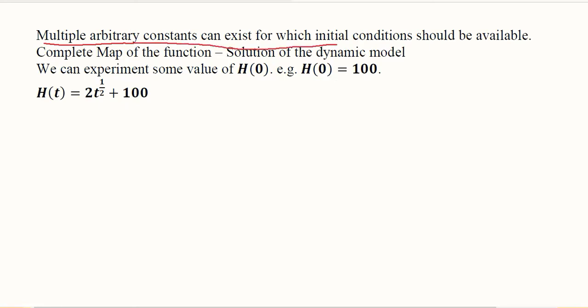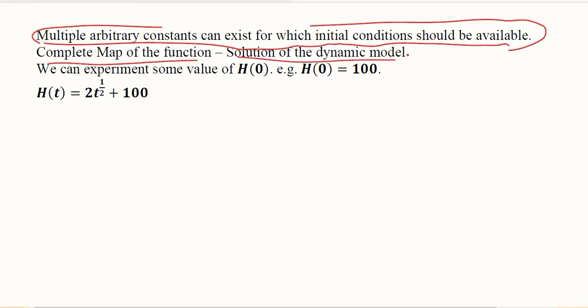Multiple arbitrary constants can exist, for which initial conditions should be available. If we have two or more functions to integrate, we will get more than one constant of integration, all arbitrary in nature, and we will need initial conditions for each. Those initial conditions help us figure out and definitize those arbitrary constants. We will see that possibility in lectures ahead. We can say the dynamic model is now solved, and it is a complete map because it includes the initial condition and is definite in nature.